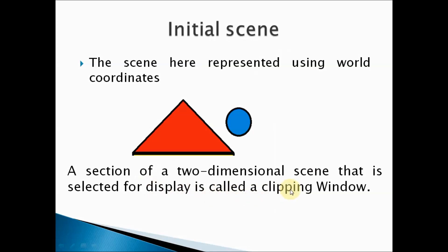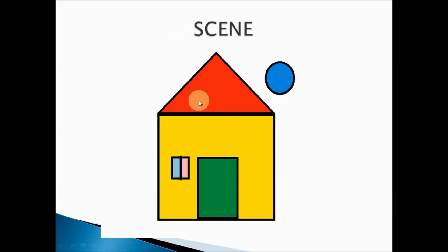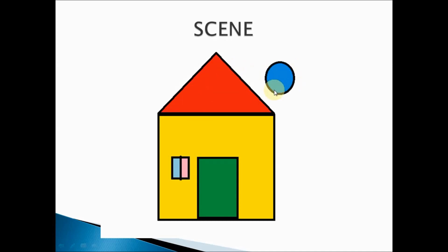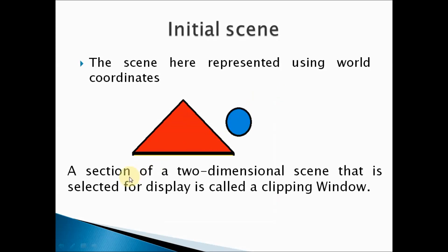That section of the two-dimensional scene that is selected for display is called the clipping window. Initially the scene is in world coordinates, containing every geometrical object. If I'm only interested in a particular part — here the triangle and circle — I can select only that part. That selection process is called clipping.